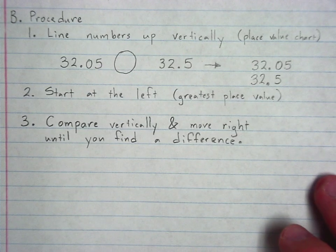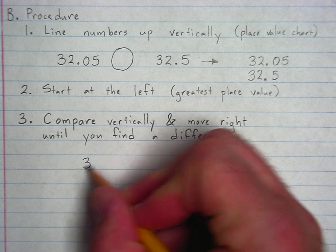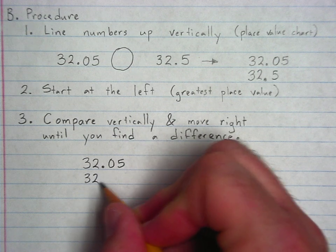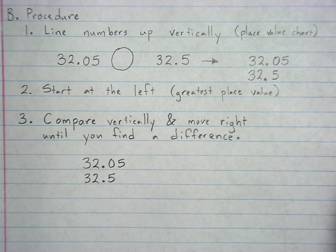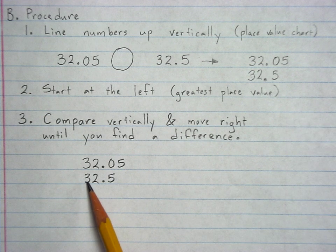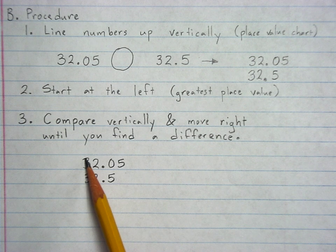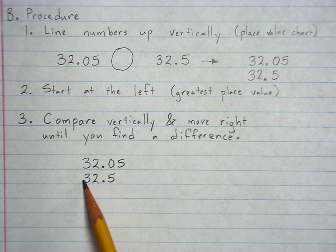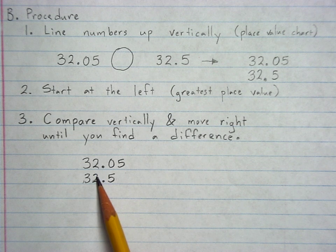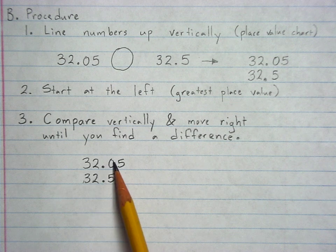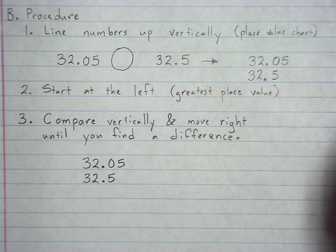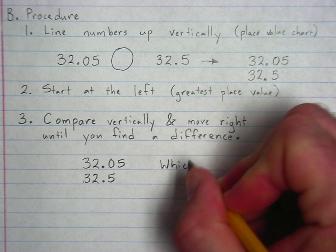So, once again, let me write these numbers. We are comparing 32.05 to 32.5. Looking at those two, I start at the left. That's step two. Start at the left. And I move to the right, looking at this and saying, okay, three and three. Are those different? No. Two and two. Are those different? No. Zero and five. Zero and five. Those are different.